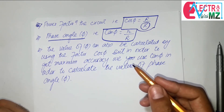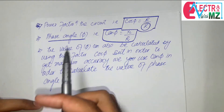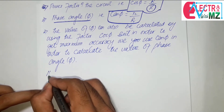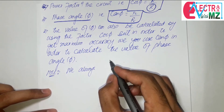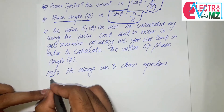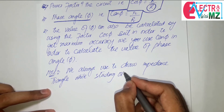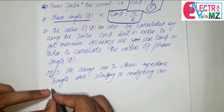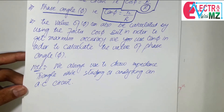The most important note here is that we always draw the impedance triangle while studying or analyzing an AC circuit. Today we discussed the impedance triangle with respect to the RL series AC circuit. In the next upcoming videos, when we discuss the RC series AC circuit, we will also discuss the impedance triangle but in the form of an RC series circuit.